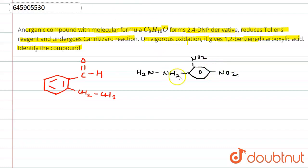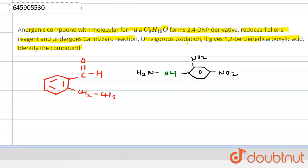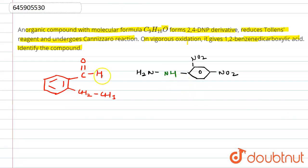So it can give 2,4-DNP test. Any aldehyde or ketone can give 2,4-DNP test. That means aldehyde is there and it reduces Tollens'. For Tollens' we need aldehyde.